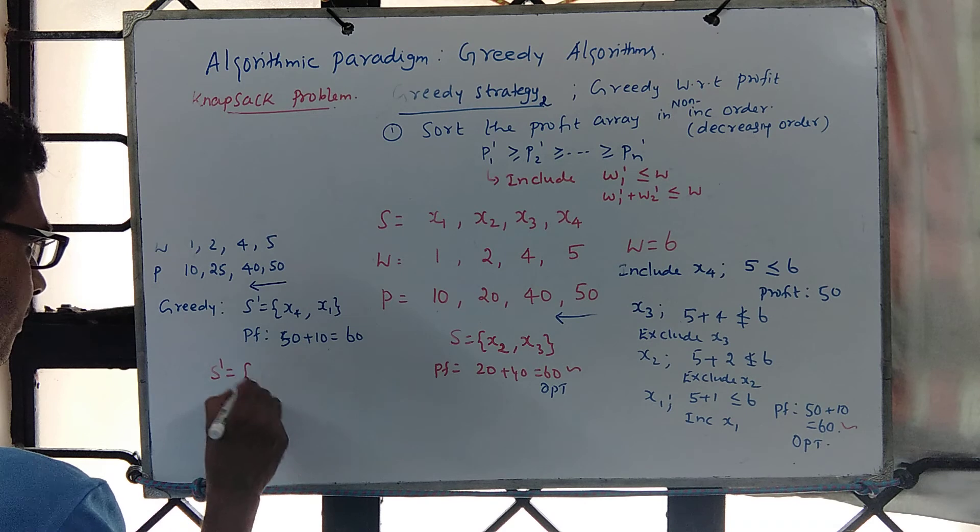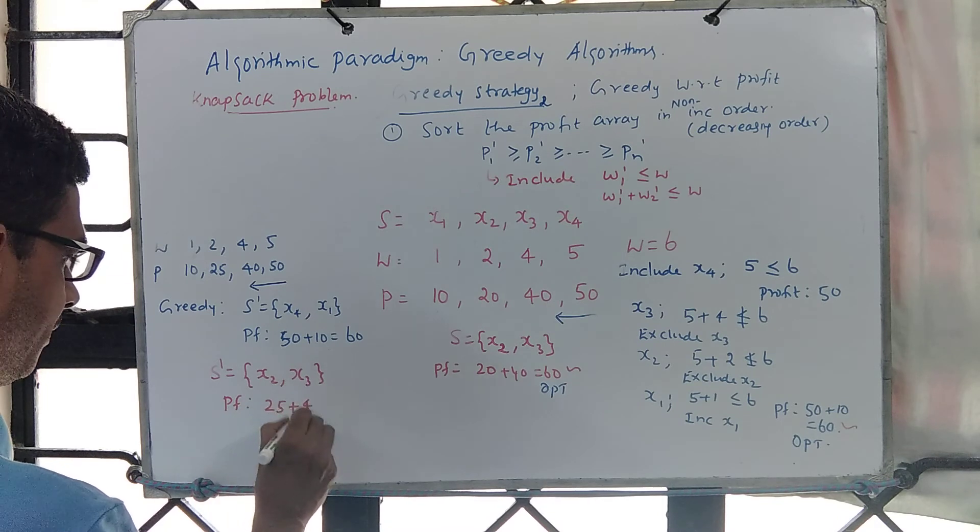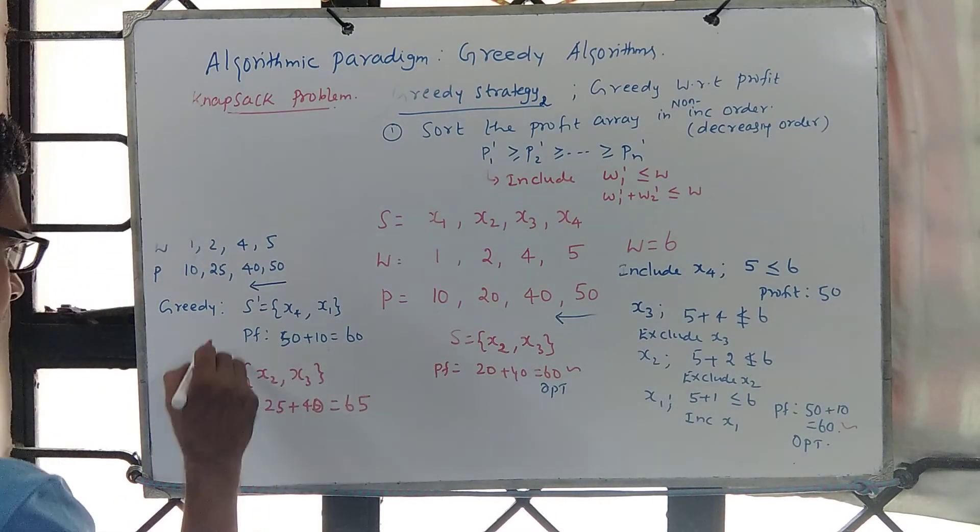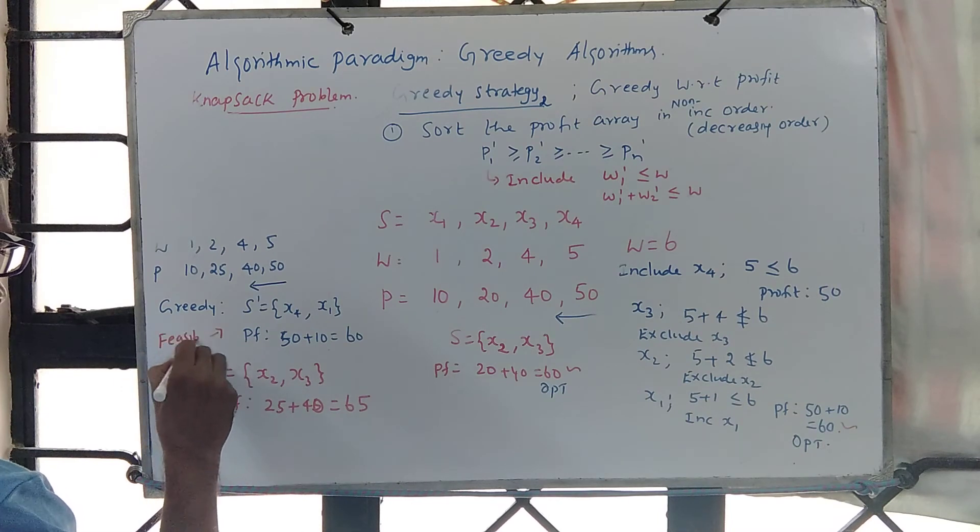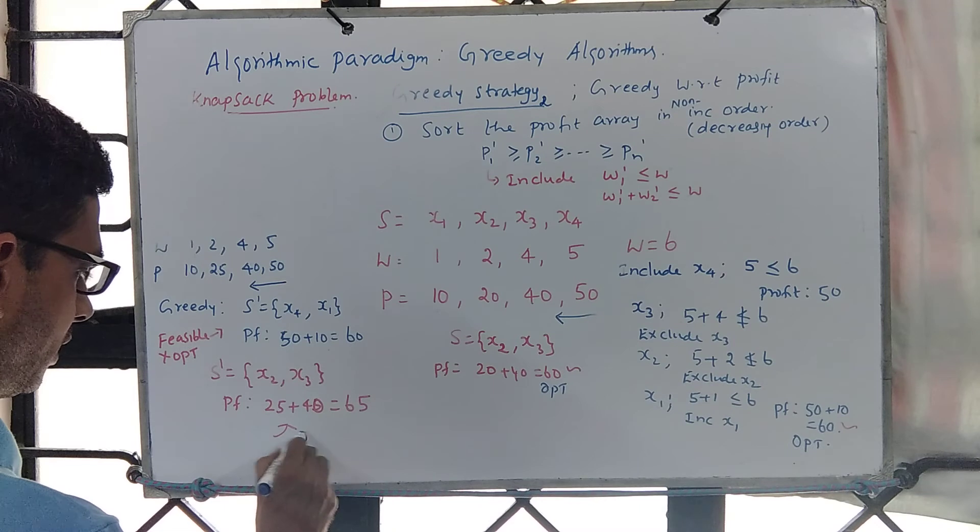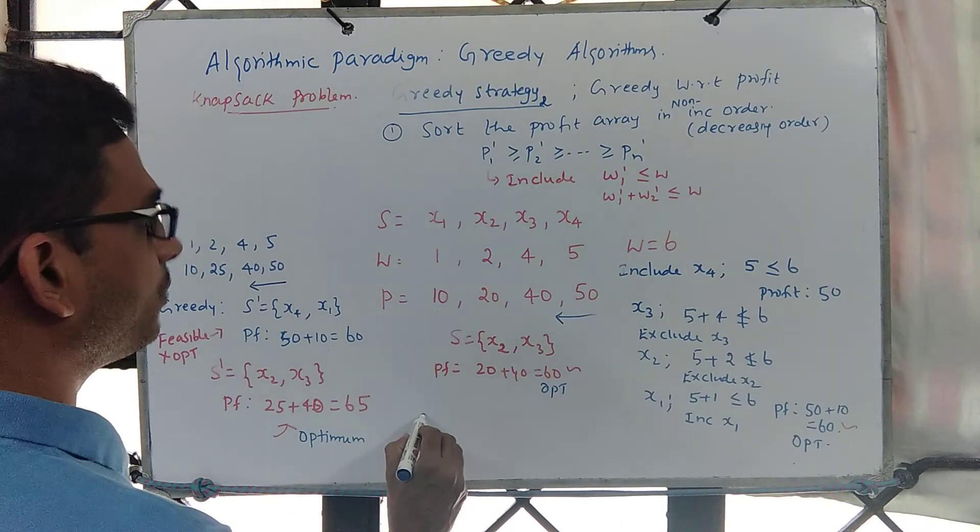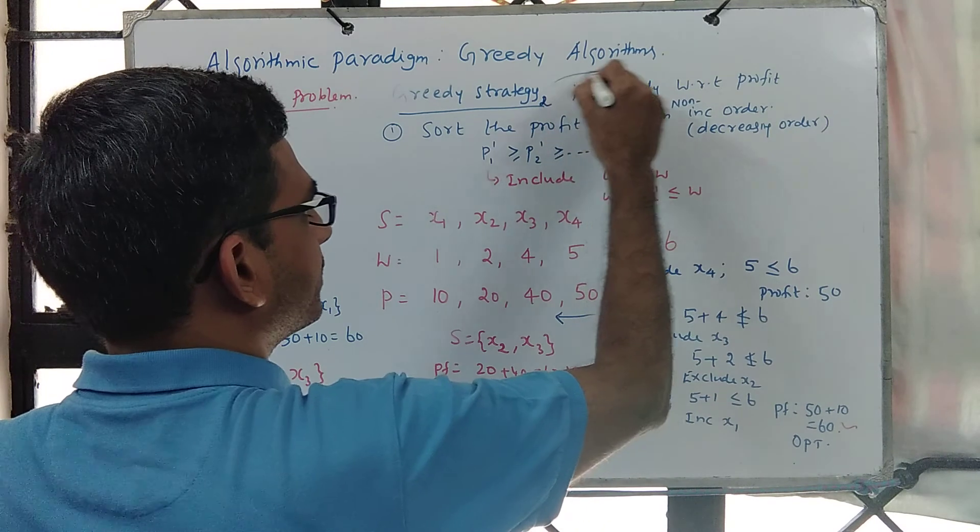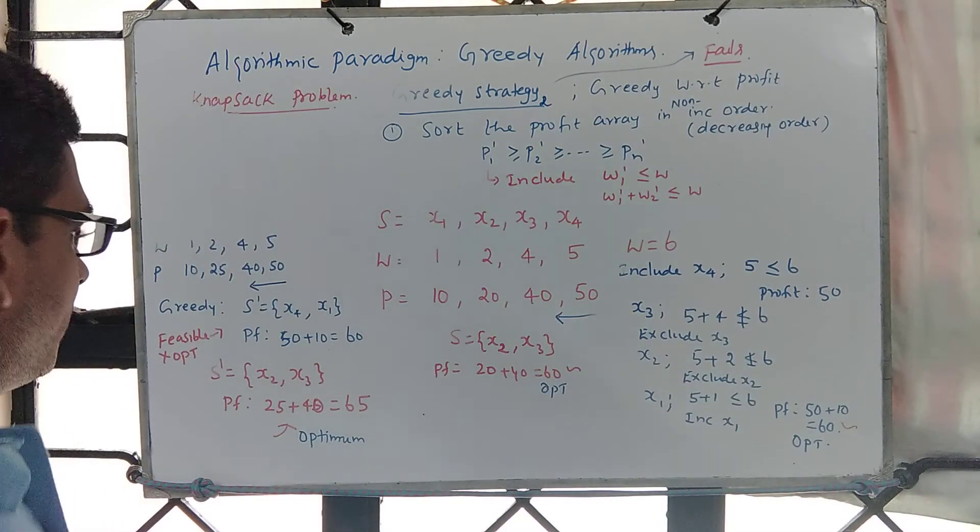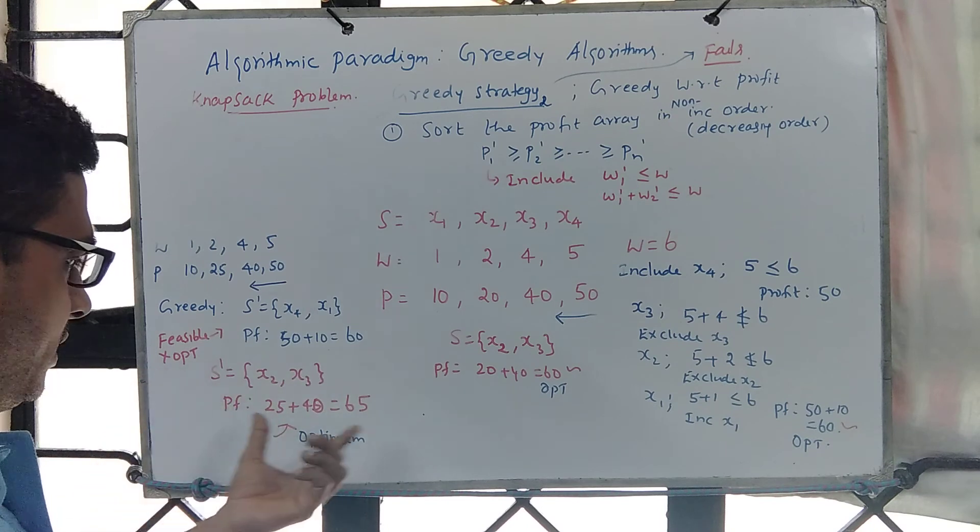But look at this solution. Look at x2 and x3. So the profit earned is 25 plus 40, so we get 65. So that shows that this is just feasible but not optimal, but you have a different solution which is optimum. So this shows that greedy with respect to profit fails. So greedy strategy with respect to profit, it fails. So here is a counter-example for which the solution given by the greedy is this: profit earned is 60, but the optimum is 65.